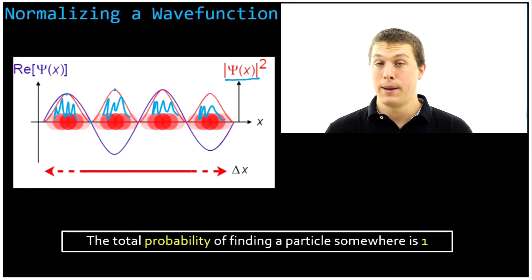Same thing's true if I take a basketball and I chuck it into a gym. Somewhere in that gym I will find that ball. So what's the chances of finding it over the whole gym? 100%. It must be there. Doesn't make sense for it to be 700%, or 30%, because it's somewhere in that gym. And we're going to do that same thing with our wave functions.